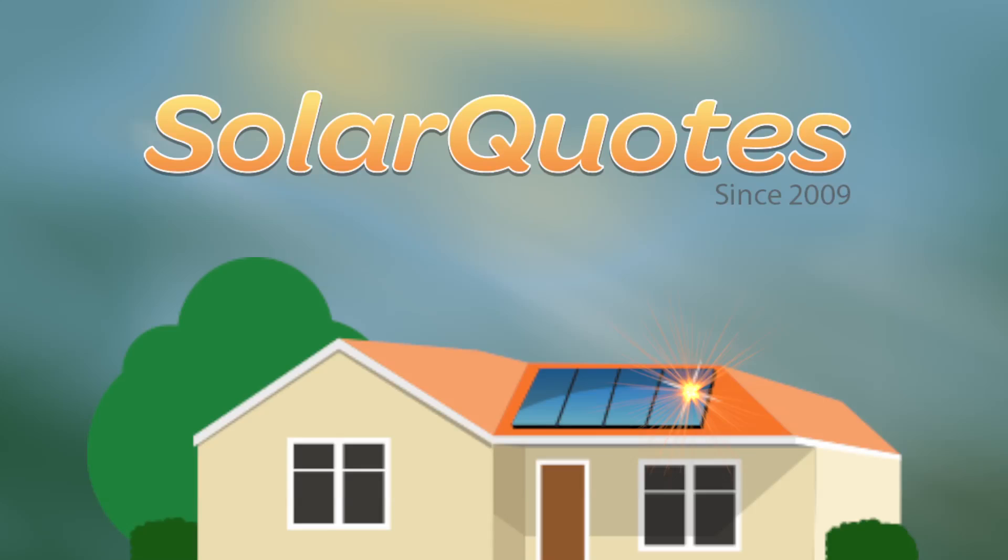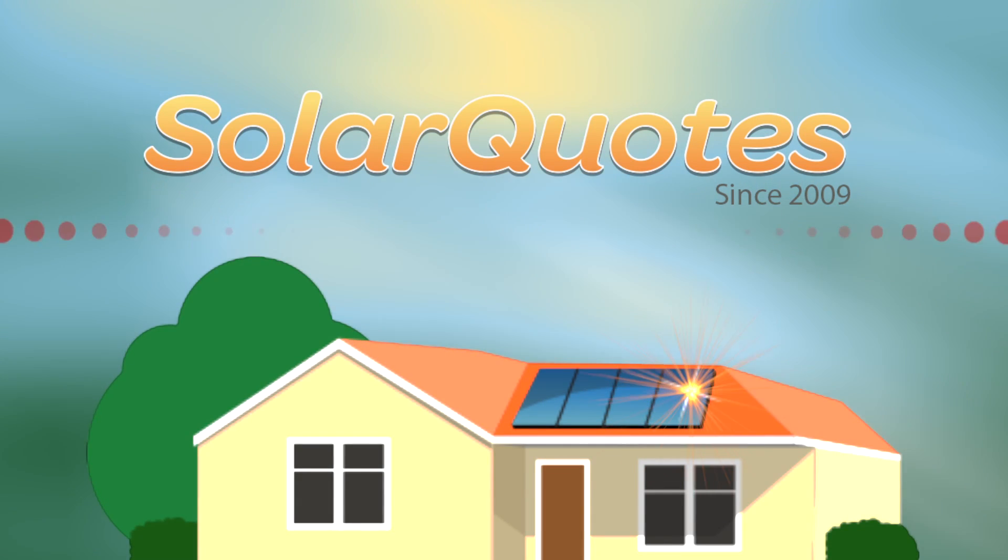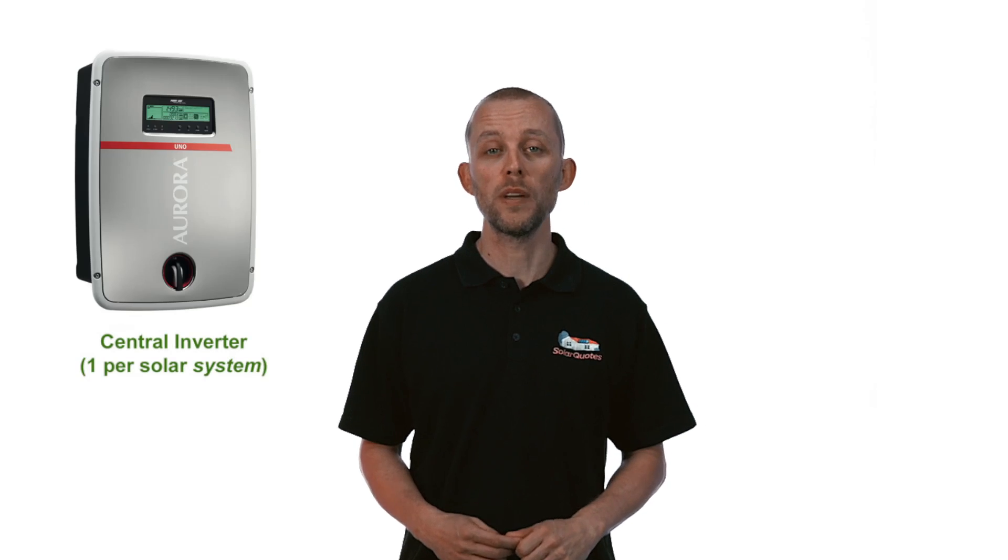Today I'm going to talk about solar micro inverters. There are two types of inverter you can get for a solar system. There's the conventional one which is probably on 95% of Australian solar systems and that's called a central inverter.